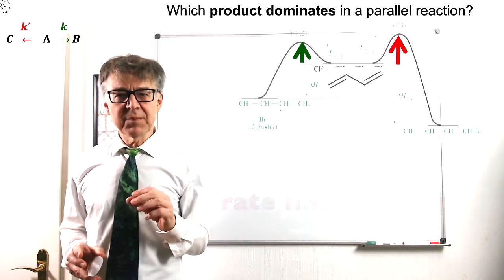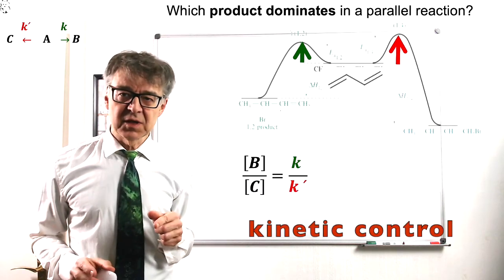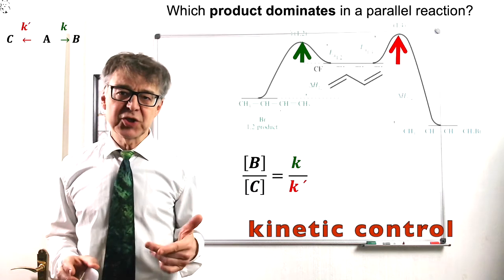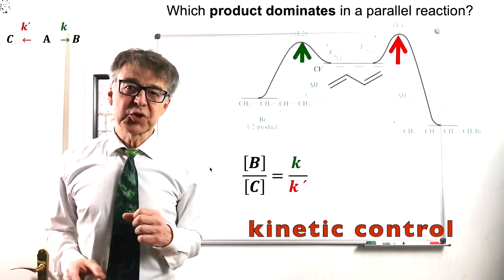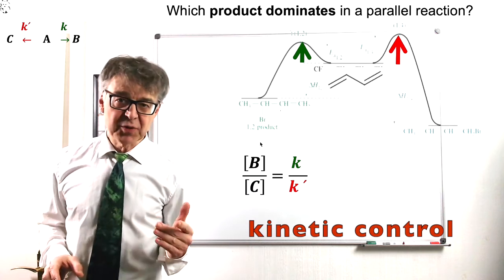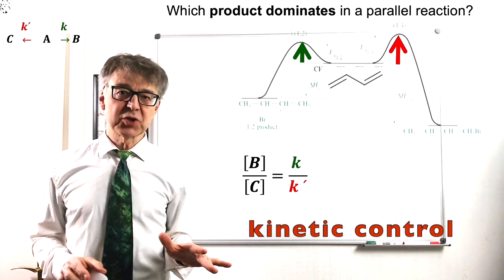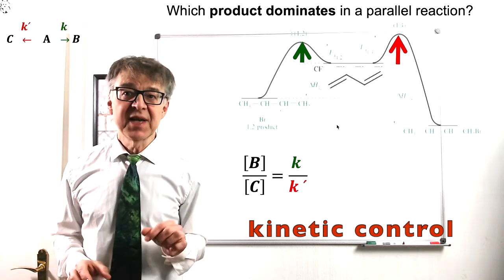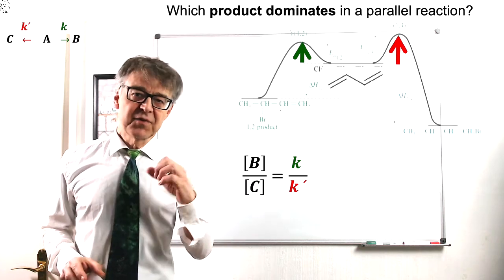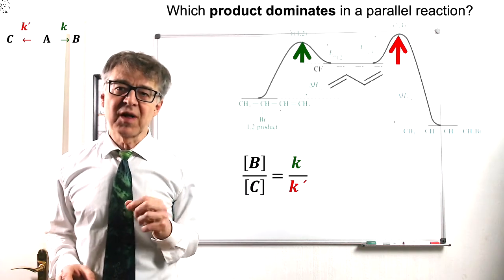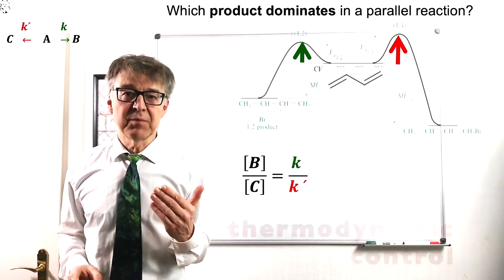However, this only applies if the reaction is kinetically controlled, if you have a lack of thermal energy and time. In our example, the 1-2 addition product is the so-called kinetic product. It is formed faster and at low temperature and with a short reaction time, it is the main product. At high temperatures and long reaction times, different activation energies are no longer this relevant. Now thermodynamic stability decides on the main product.